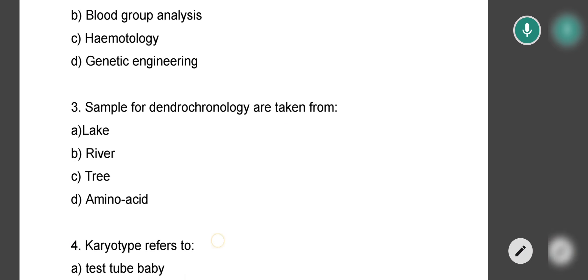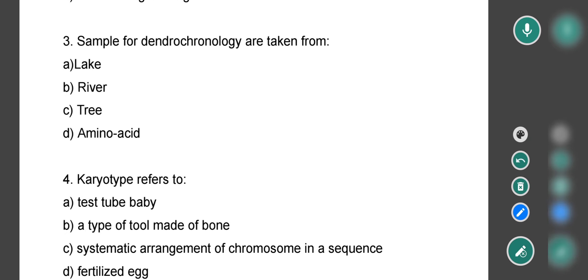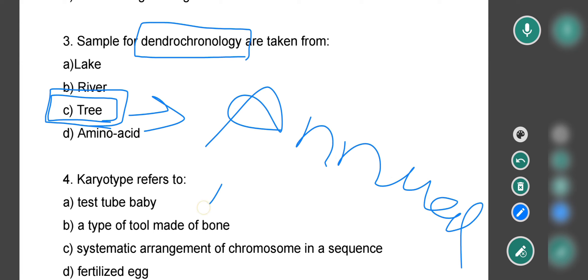Next question asks: Samples for dendrochronology are taken from? Dendrochronology, which is a dating method, where do we take samples from? Options are lake, river, tree, or amino acid. The correct option is option C, that is tree. In dendrochronology, we try to date using trees, specifically using the annual rings of the tree, which are counted for dating.